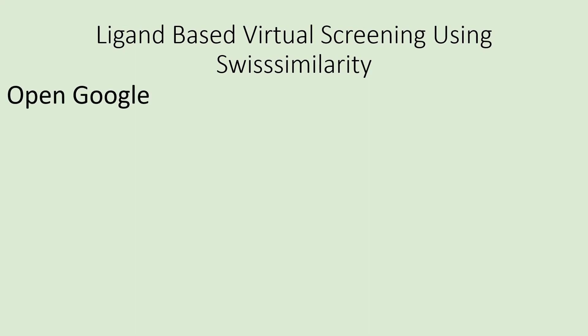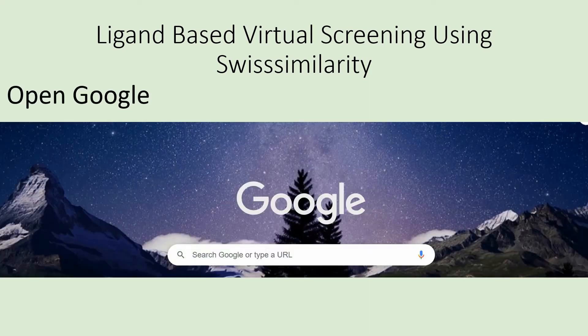First of all, open Google and type 'Swiss Drug Design', or you can type 'Swiss Similarity' directly in Google. But let me take you to the main page of Swiss Drug Design, where other tools are also available. Type Swiss Drug Design and press Enter.